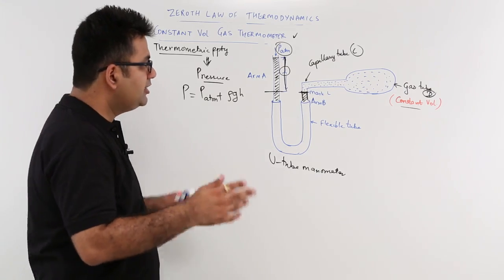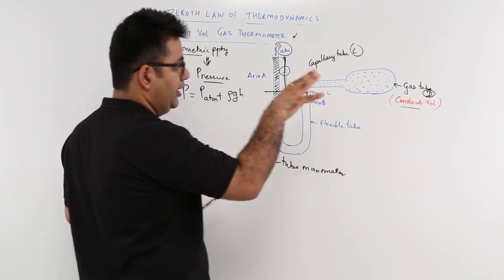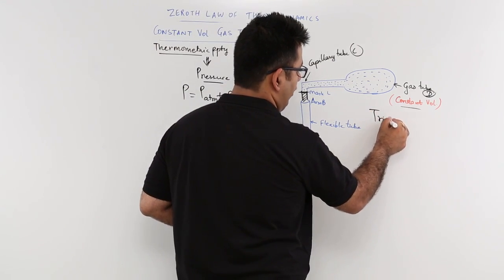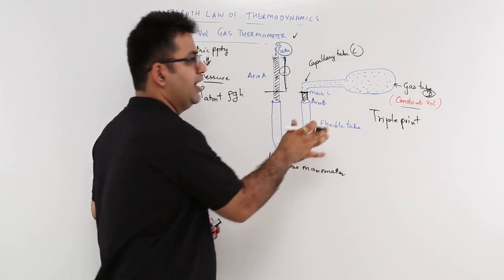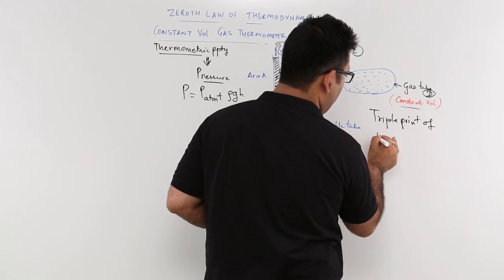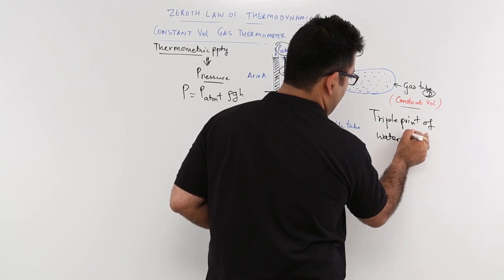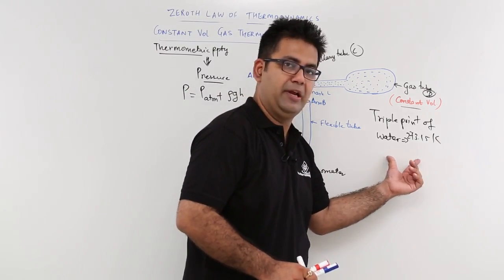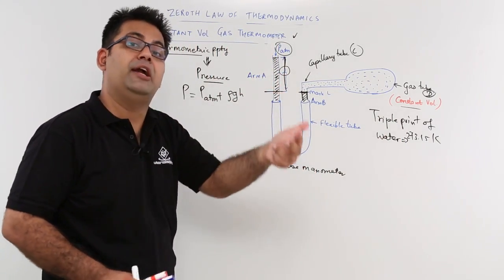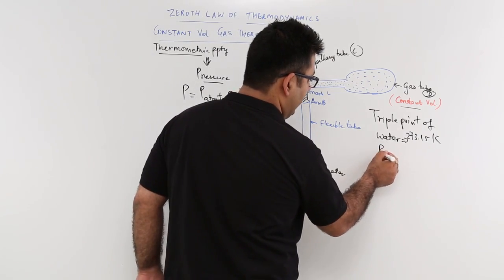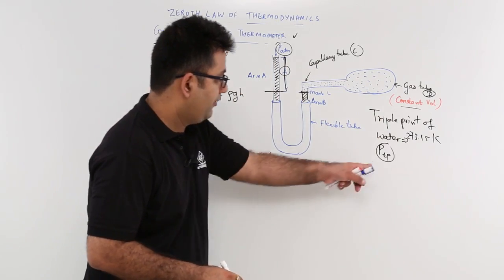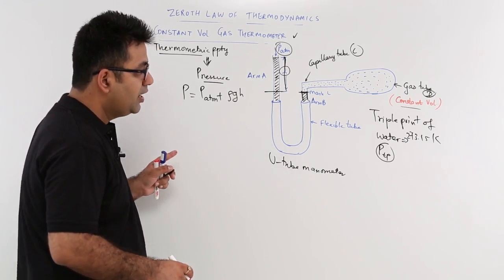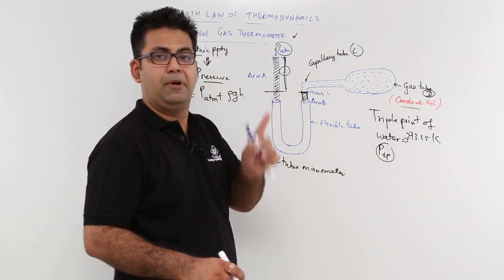Now how do we calibrate it? Initially, we keep this constant volume bulb in a water bath which is at the triple point of water. We maintain this gas tube at the triple point of water temperature, which is 273.15 Kelvin. When you maintain this temperature for this constant volume gas, your corresponding pressure would be attained. This corresponding pressure that you attain is PTP. You can measure PTP from this equation — we have found out the pressure at the triple point of temperature.